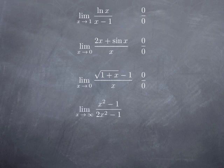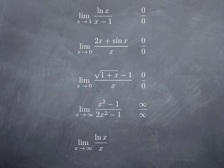Another kind of indeterminate limit is when the top and the bottom both go to infinity. For instance, the limit as x approaches infinity of (x² − 1) / (2x² − 1): the top goes to infinity, the bottom goes to infinity. In that particular case you've seen in Calc 1 how to deal with it — the top and bottom are polynomials of the same degree, so the limit is the ratio of leading coefficients, 1 over 2. But for something like the limit of ln(x) divided by x as x goes to infinity, top and bottom both go to infinity, and we don't have a general result for that.